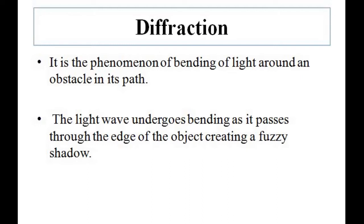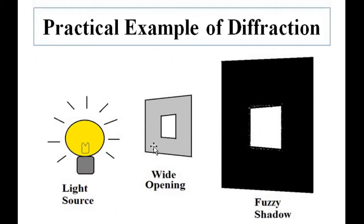You might have seen that when light strikes an obstacle and its shadow is formed, the edges of the shadow are always a little bit blurry — a little bit fuzzy, not that clear. That happens because of the phenomena of diffraction of light around the edges of the obstacle. Light bends around the edges of the object, and it creates a fuzzy or blurry shadow.